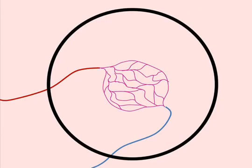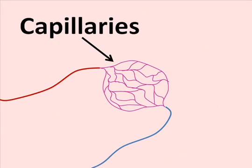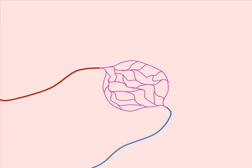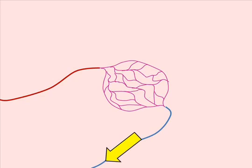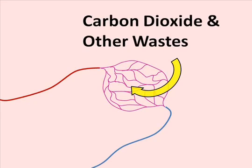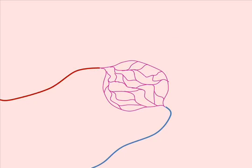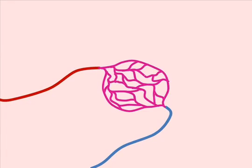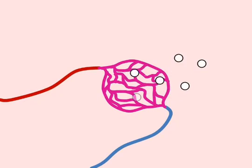This migration of cells from the bloodstream to the wound begins at the capillaries — the tiny vessels that connect the very small arteries to the very small veins. As blood passes from the small artery through the capillaries and into the small vein, oxygen and nutrients are delivered to the tissue, and carbon dioxide and other waste products are absorbed and carried away. The migration of white blood cells is made possible by the dilation and increased permeability of these capillaries, which allows circulating white blood cells to slip through the vessel wall and make their way to the wound.